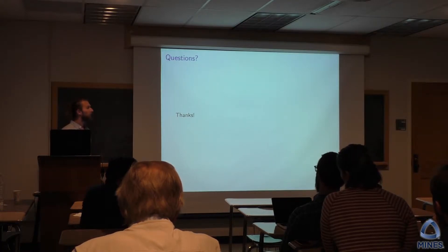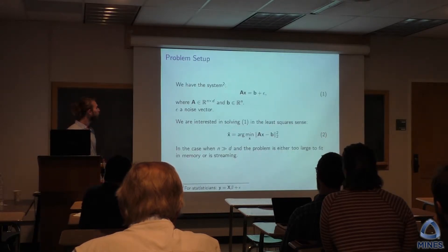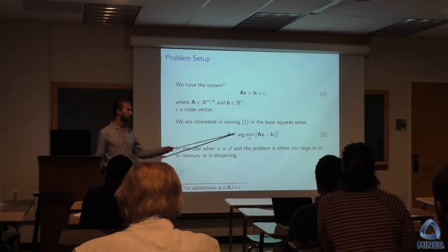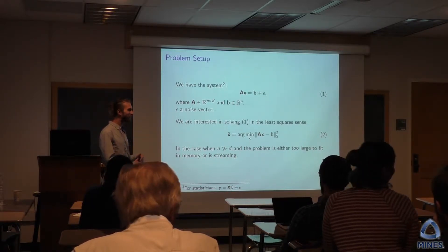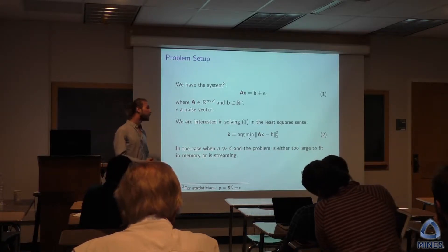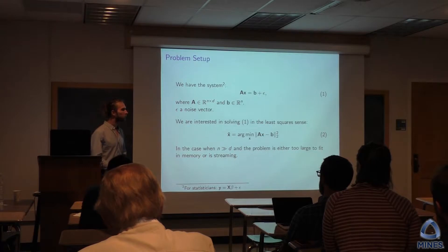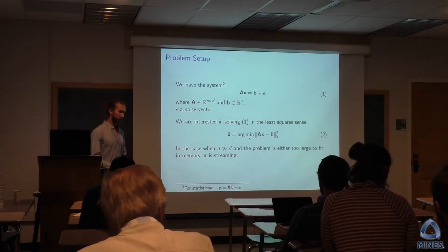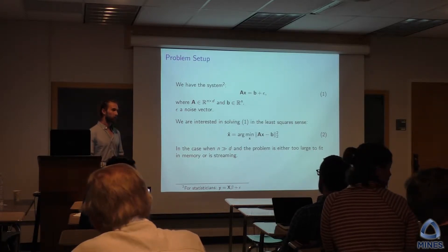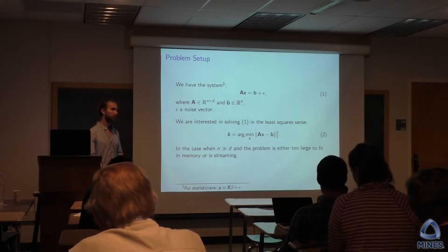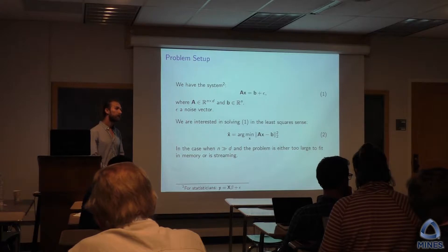The noise is the whole reason that we use least squares at all. If you know something about the noise, you can create a connection to the lambda — lambda is kind of a signal-to-noise ratio in some sense. The noise is what makes B not in the column space of A. So the noise comes into assessing the statistical properties of the solution — we haven't talked about that yet, but that's where it comes in.